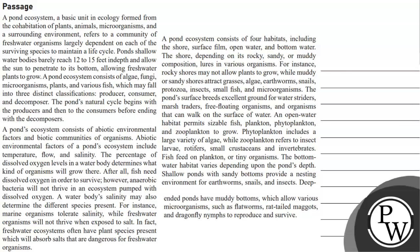Hello Bacho, let's read the questions. A pond ecosystem is a basic unit in ecology formed from a coexistence of plants, animals, microorganisms and a surrounding environment. It refers to a community of freshwater organisms largely dependent on each of the surviving species to maintain a life cycle.